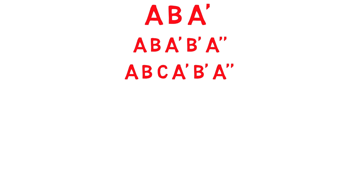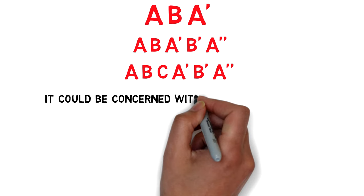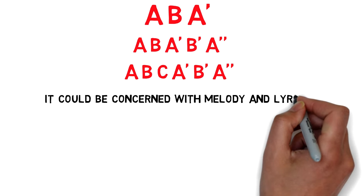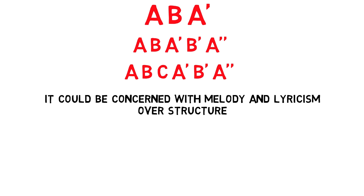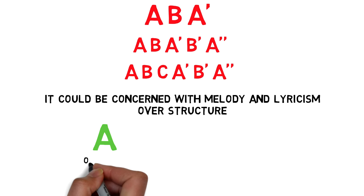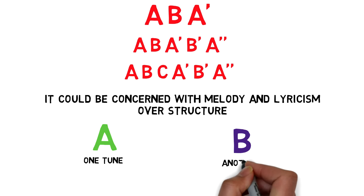On the other hand, the slow movement could simply be concerned with beautiful melody and lyricism rather than structure — so it could simply be A as one tune and B as another.